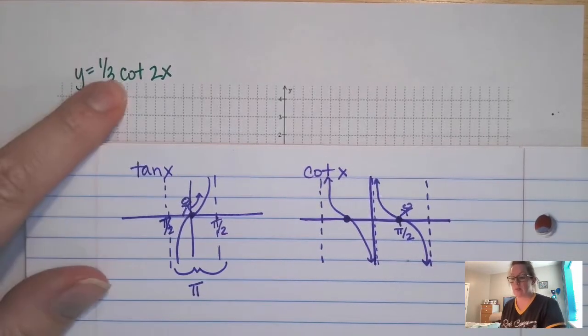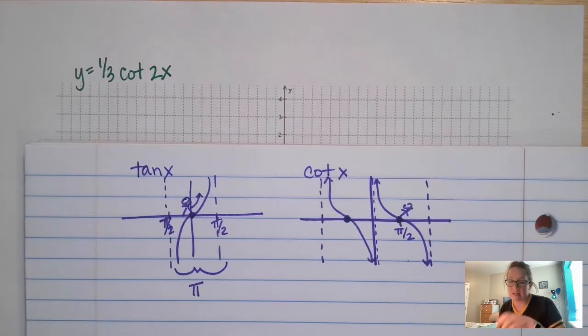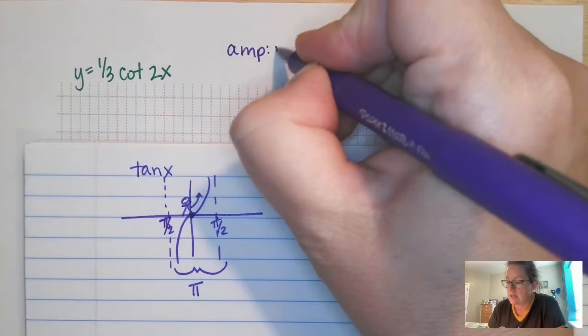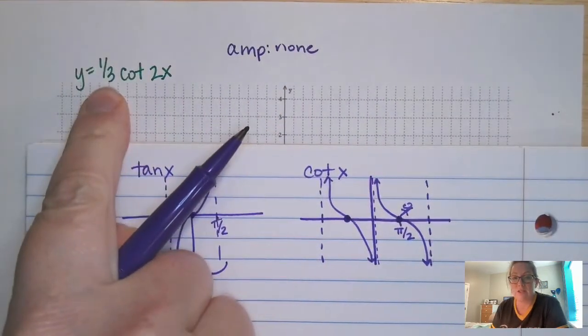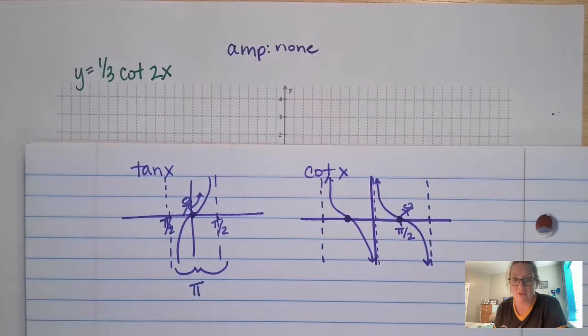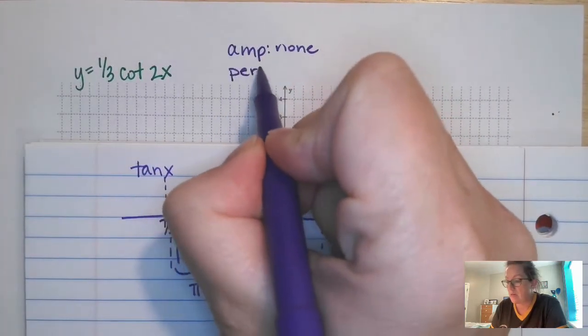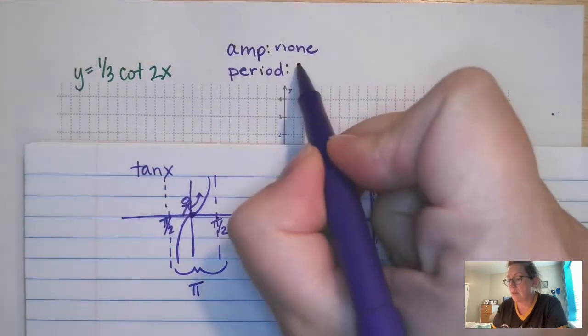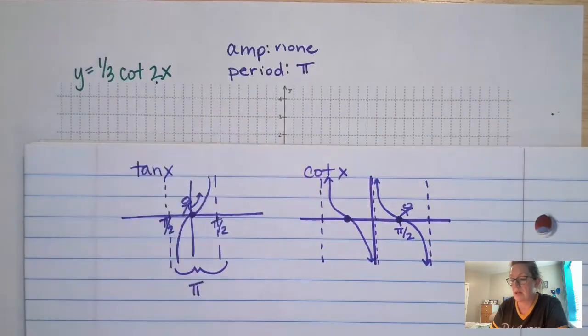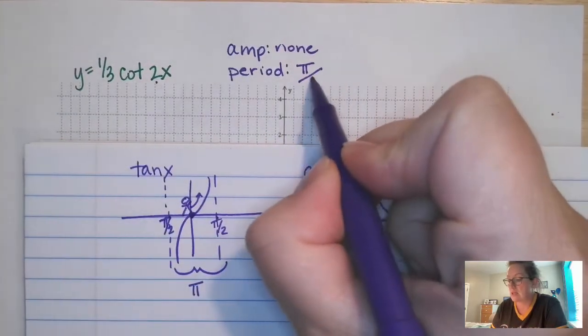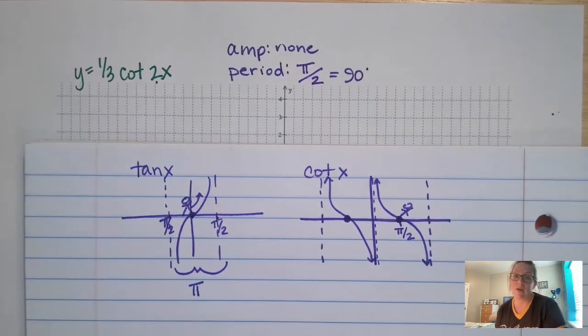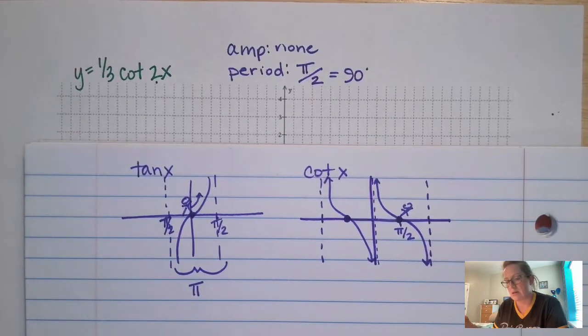Same thing like we were talking about before, where the amplitude is, it doesn't really exist on these guys. So we say amplitude is none. What does the 1/3 do? It just affects the steepness of this curve, which we don't even have to worry about. The period for tan and cotangent functions are pi, divide by that constant that's with the theta or the x, which in this case is 2. So every 90 degrees, a period recycles over again.